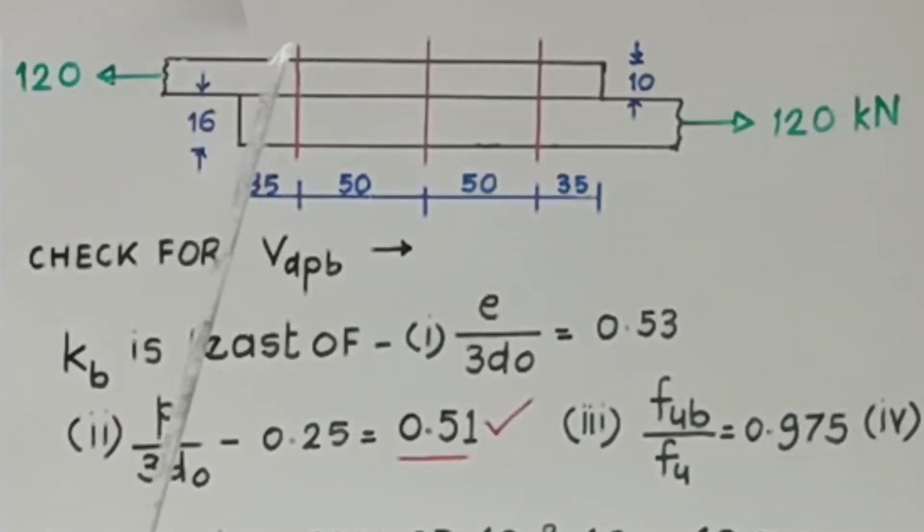Now look here, though this is 16 and this is 10, there will be some eccentricity, but that eccentricity is negligible, and hence it is not taken into account. Now, here we have assumed that VDPB is greater than VDSB. So it is necessary to check whether this assumption is correct or not. So check for VDPB.